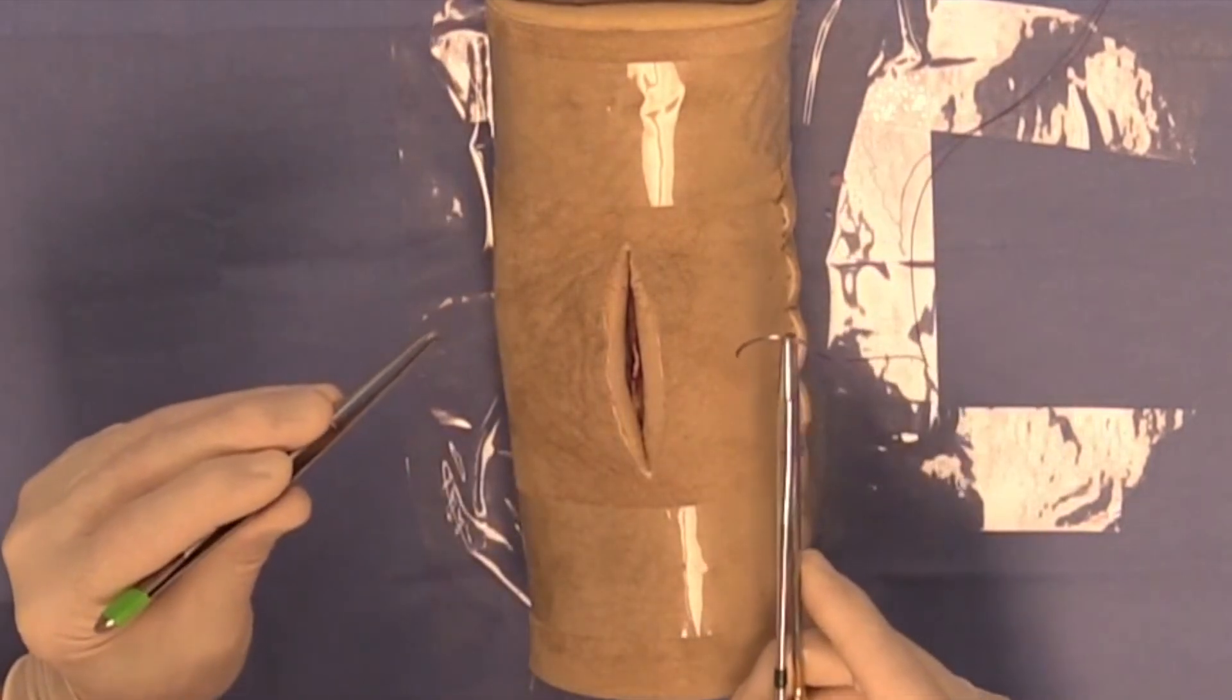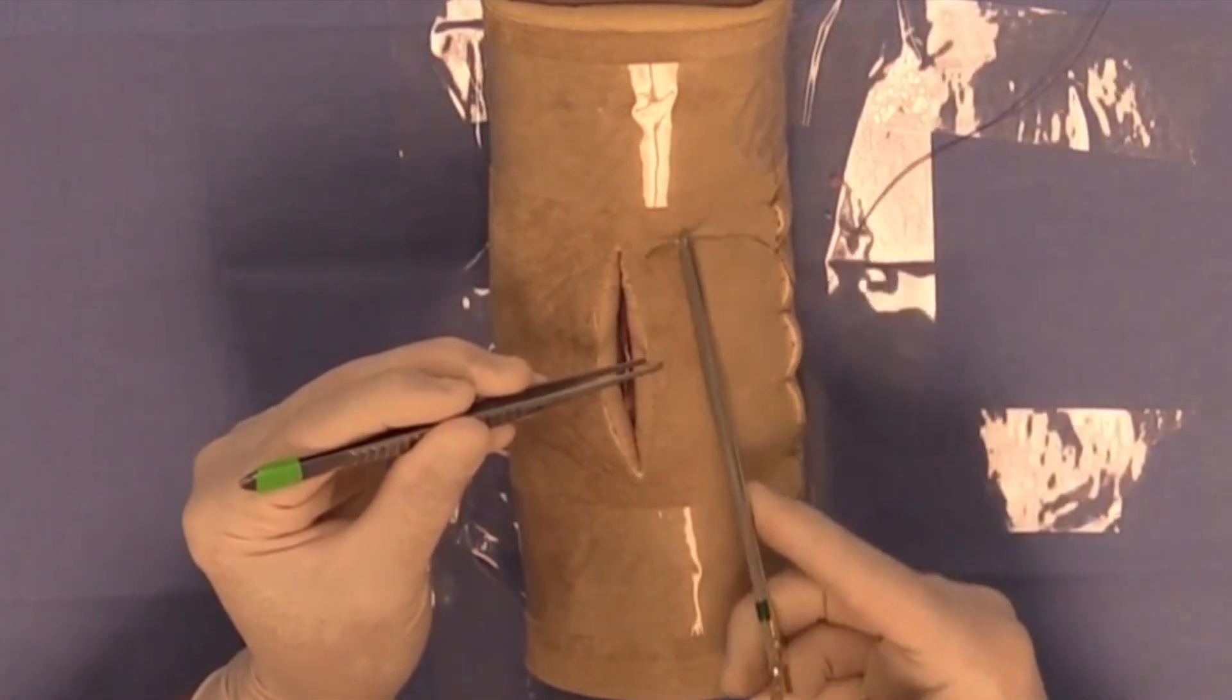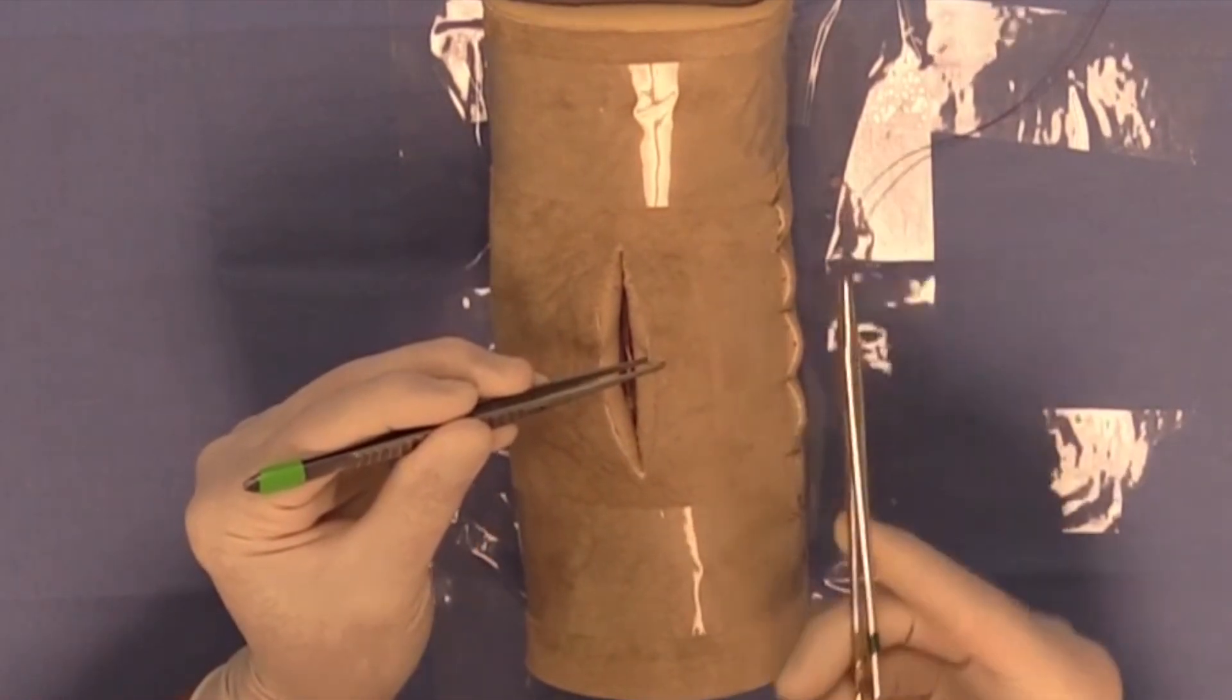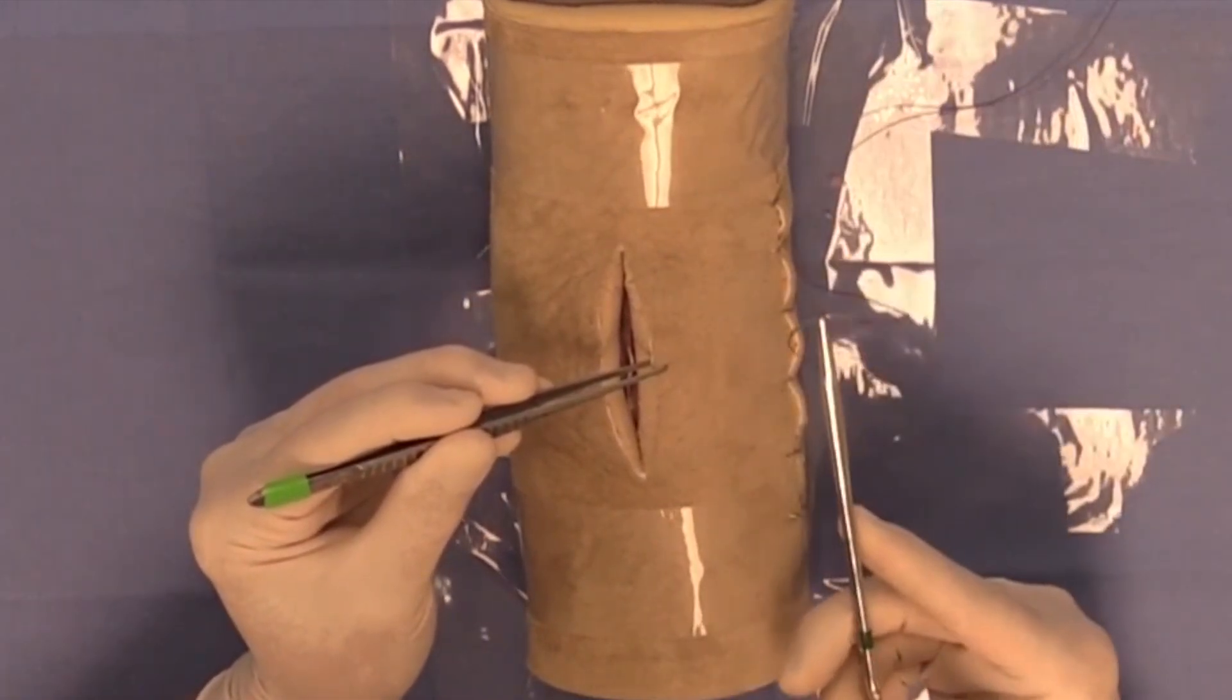Most suture patterns that I start are going to be started on the near side of the incision. The near side for me would be the right side of the incision as demonstrated here, because I'm right-handed.